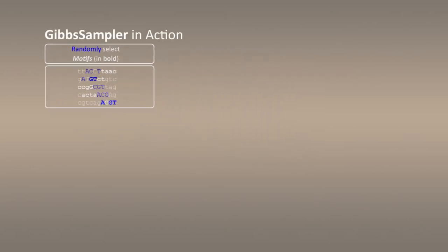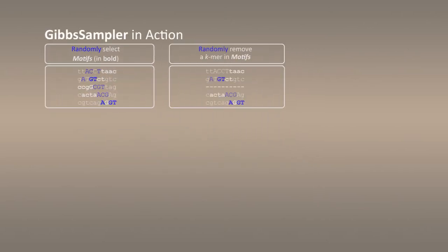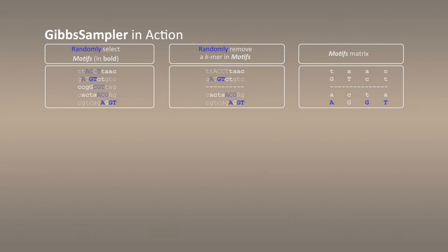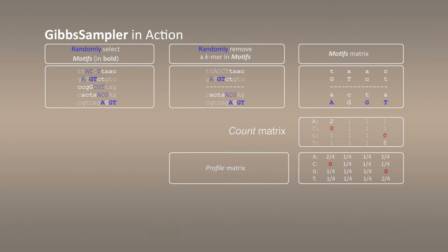After we've done that, let's do something unusual — let's actually remove one of the found motifs along with the sequence it belongs to. In our example, we remove the third motif and the third DNA sequence from consideration. We then consider the resulting set of just four motifs and build the count matrix based on this set, and afterwards construct the profile matrix based on this count matrix.